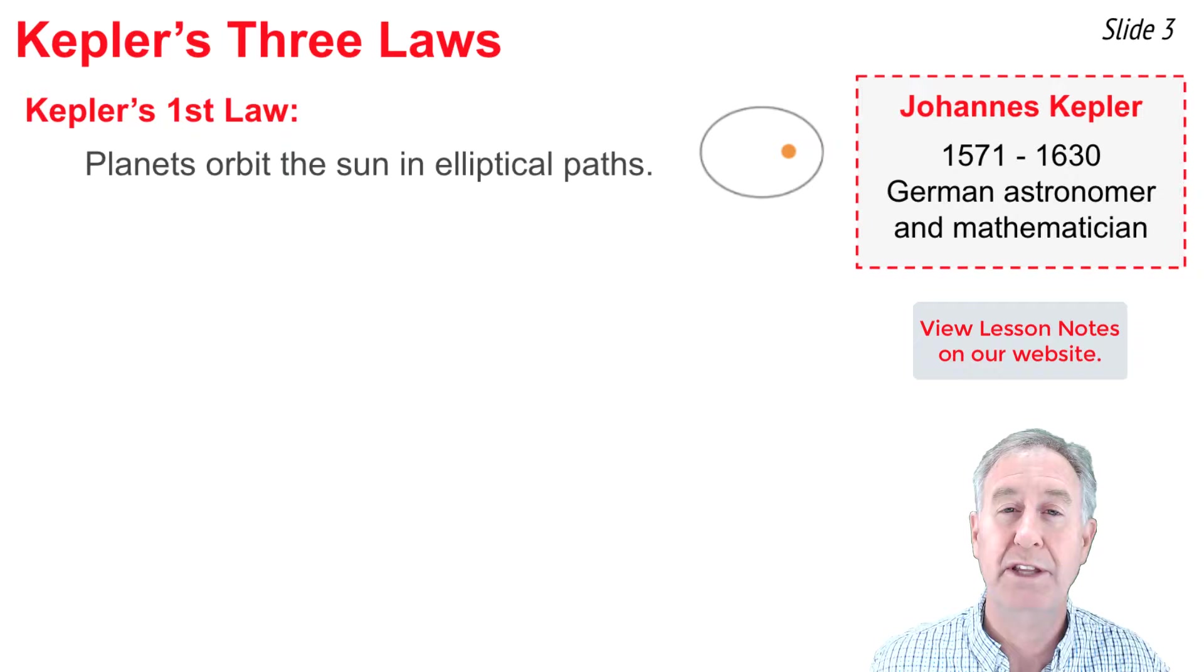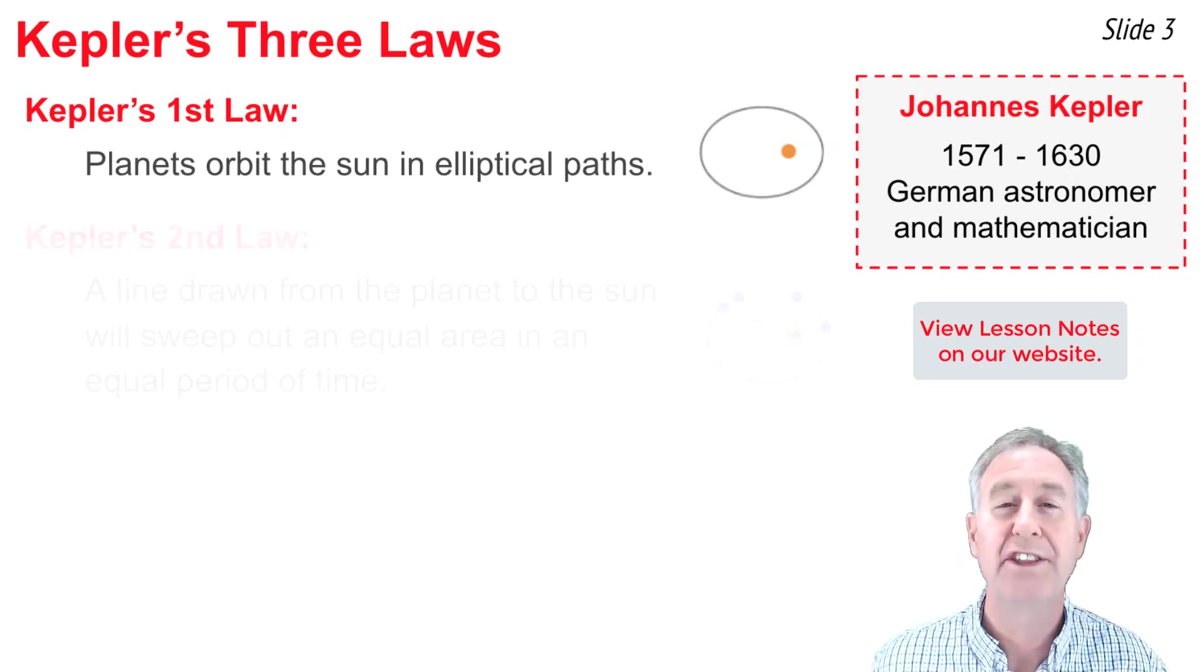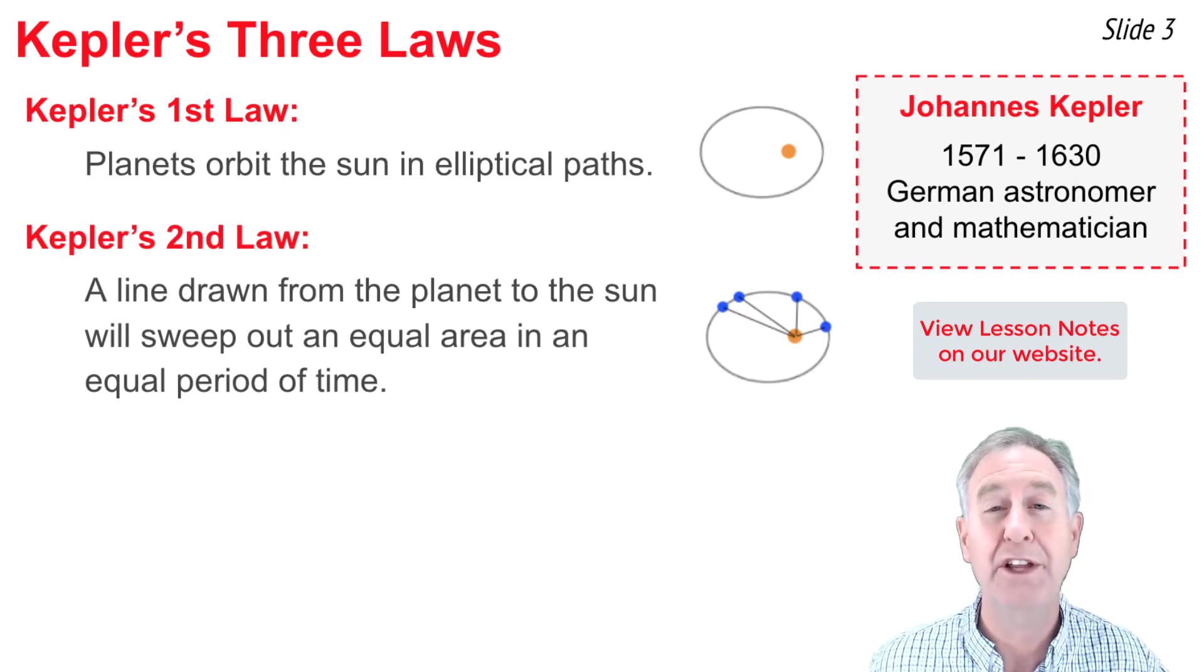The First Law claims that planets orbit the sun in an elliptical path. The Second Law claims that an imaginary line that connects a planet and the sun would sweep out an equal area in an equal period of time.